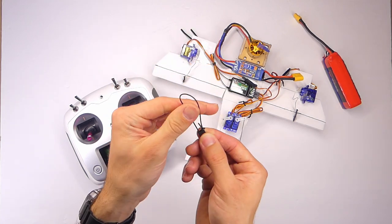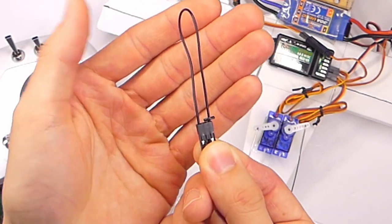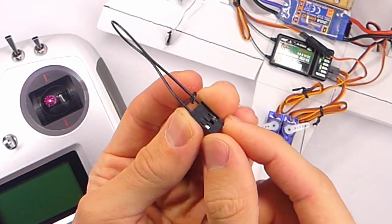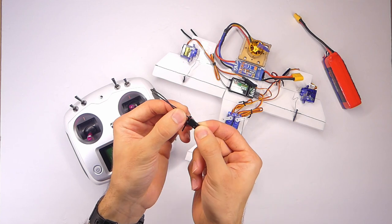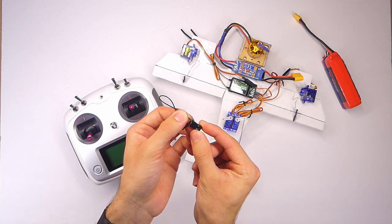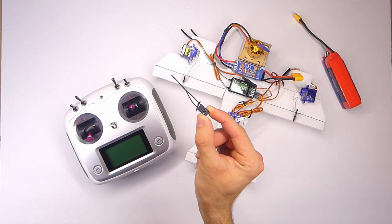The bind plug is just a little piece of wire in a loop with a connector on the end, so if you need to improvise with something else, maybe even a paper clip, you probably can. Let's get started.